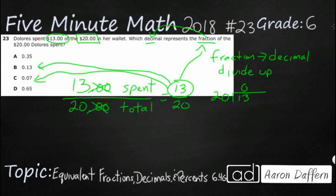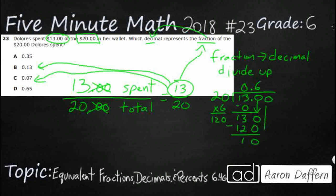So 20 does not go into 13 — that's why it's going to be a decimal. We add a decimal point after 13, carry it up into the quotient bar, and add zeros as needed. 20 goes into 130 six times — 6 times 20 is 120 — leaving a remainder of 10. We bring down another zero: 20 goes into 100 five times. 5 times 20 is 100, and we have our answer: 0.65, or 65 hundredths.